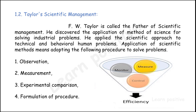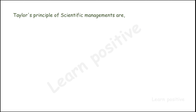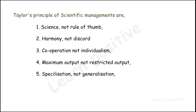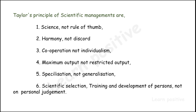By doing these four key points — monitoring, measuring, and controlling the industry — it gives proper efficiency and helps the industry grow. Taylor's principles of scientific management sets six points: one, science not rule of thumb; two, harmony not discard; three, cooperation not individualism; four, maximum output not restricted output; five, specialization not generalization; and six, scientific selection, training and development of a person, not personal judgment.